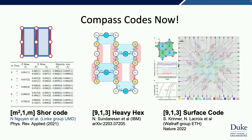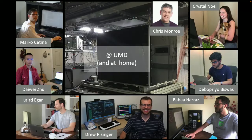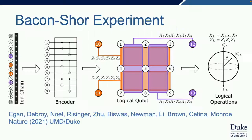For ion traps, this is work with Chris Monroe's group, which has now moved to Duke. This is a picture of the black box where inside there is an ion trap with all these ions, 32 outputs to measure all ions independently, and 32 inputs to control them all independently. During the pandemic, students working with Chris basically worked at home and controlled this. Marco and Crystal were research scientists and postdocs who have now joined as faculty at Duke. We were able to show the Bacon-Shor experiment, which was the first experiment that had all of the qubits necessary to detect and correct all types of errors on this simple code.